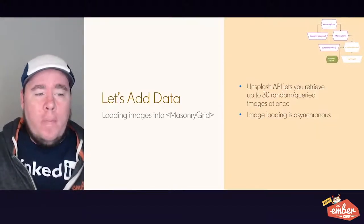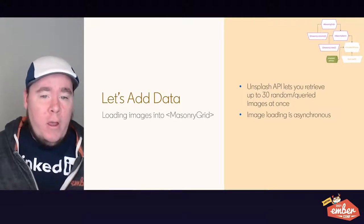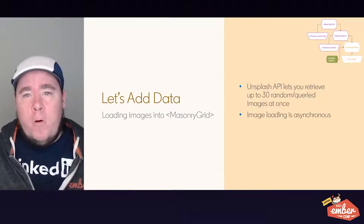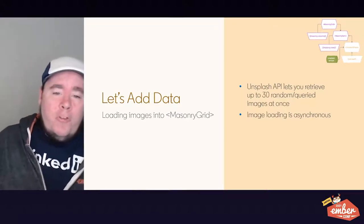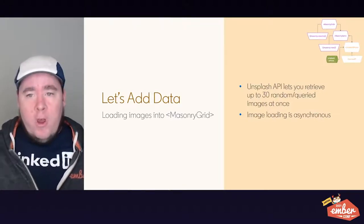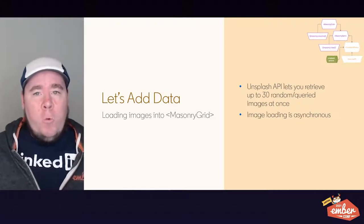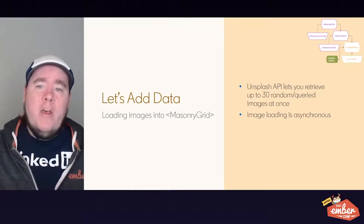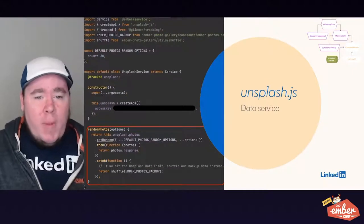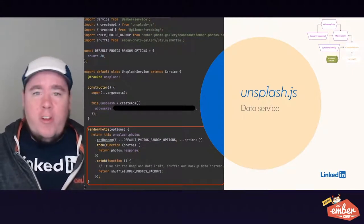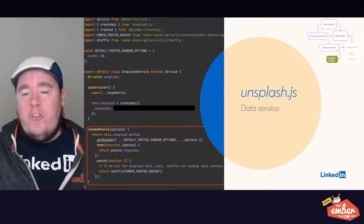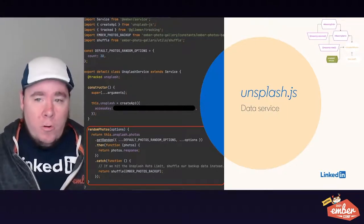Let's add some data to our masonry grid on the consumer side. I've used the Unsplash API, which allows me to retrieve up to 30 images at once. For this demo, I queried on the keyword 'Ember' — because why not. I'm also loading the images asynchronously. Even though the API itself is asynchronous, we also need to account for the fact that once we set the URL on the image elements, there is asynchronous loading of the image itself in the browser. The data service primarily interfaces with the Unsplash API — I built a method that retrieves random photos and returns the response.